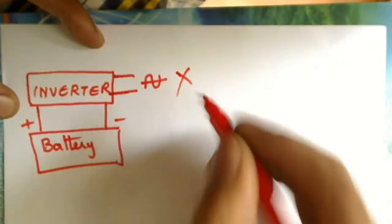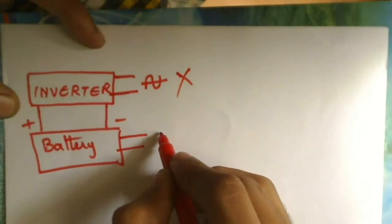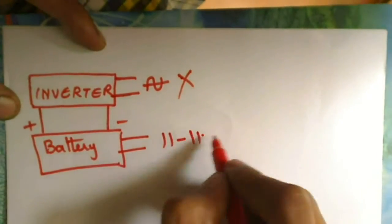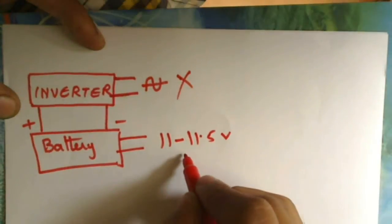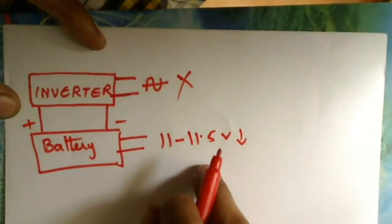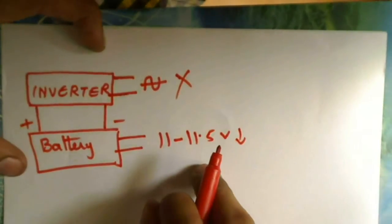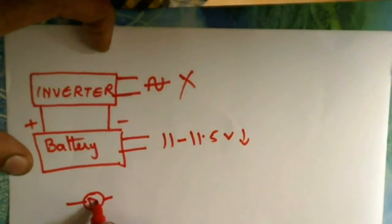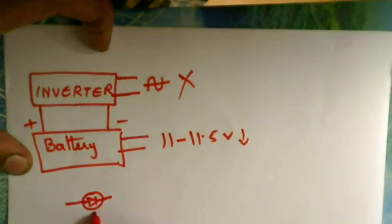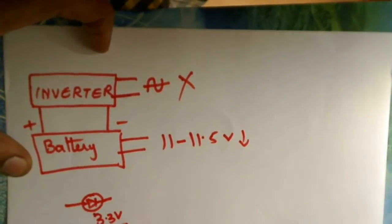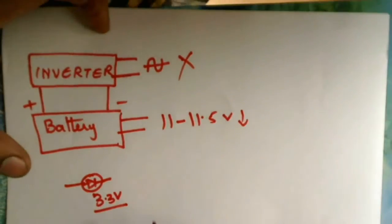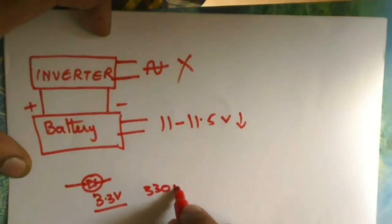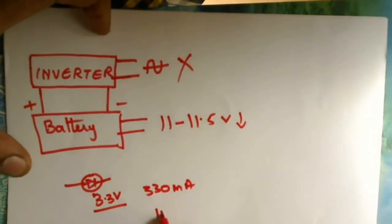Even when the inverter is switched off, there's enough voltage in the battery of about 11-11.5V or maybe a little less which can be used to light LEDs. For example, say each LED needs a voltage of 3.3V if it's a white LED. And a current of 330mA if it's a 1W LED.